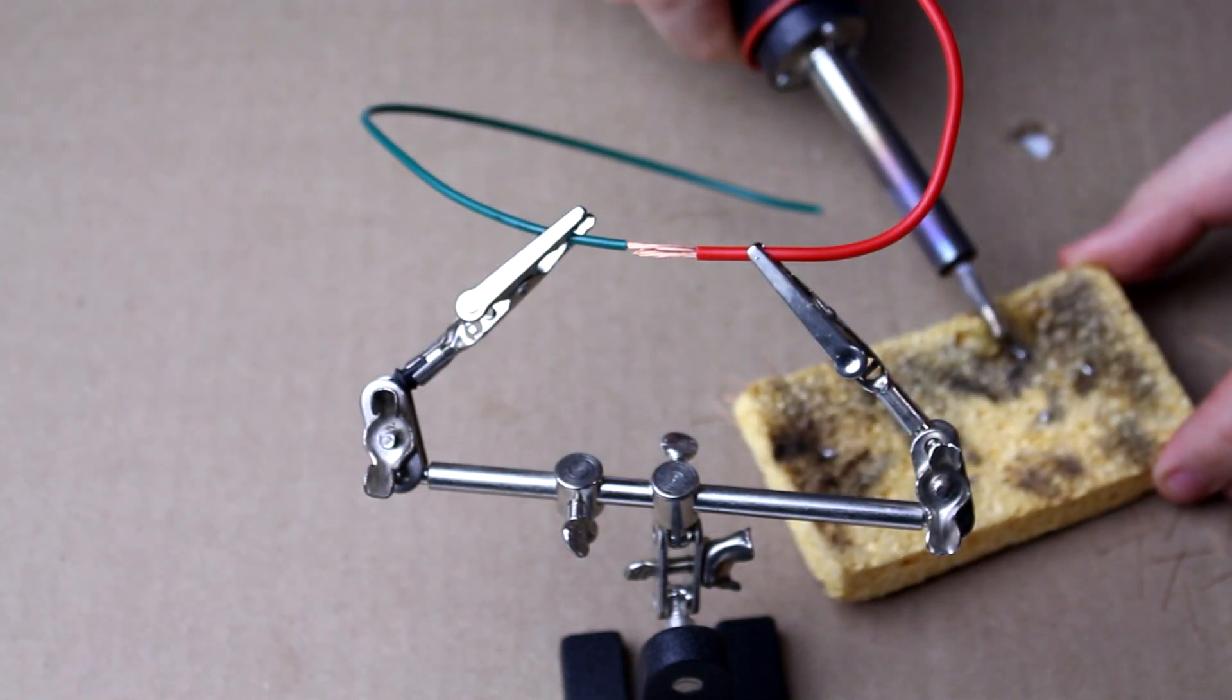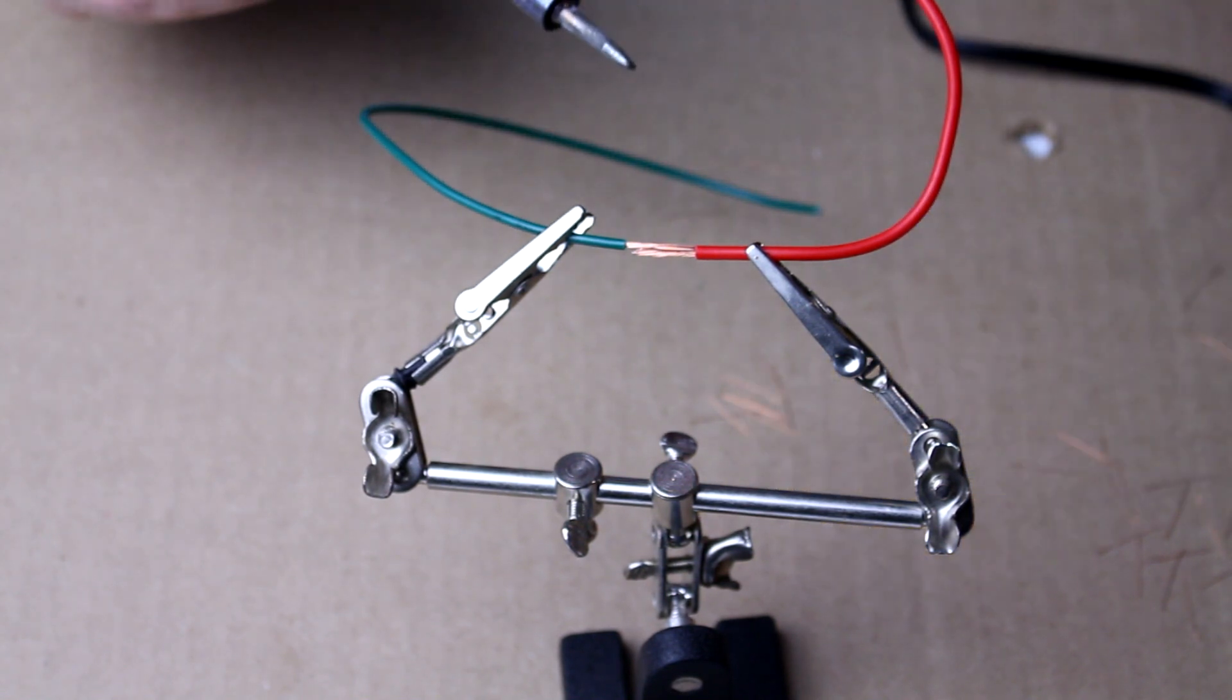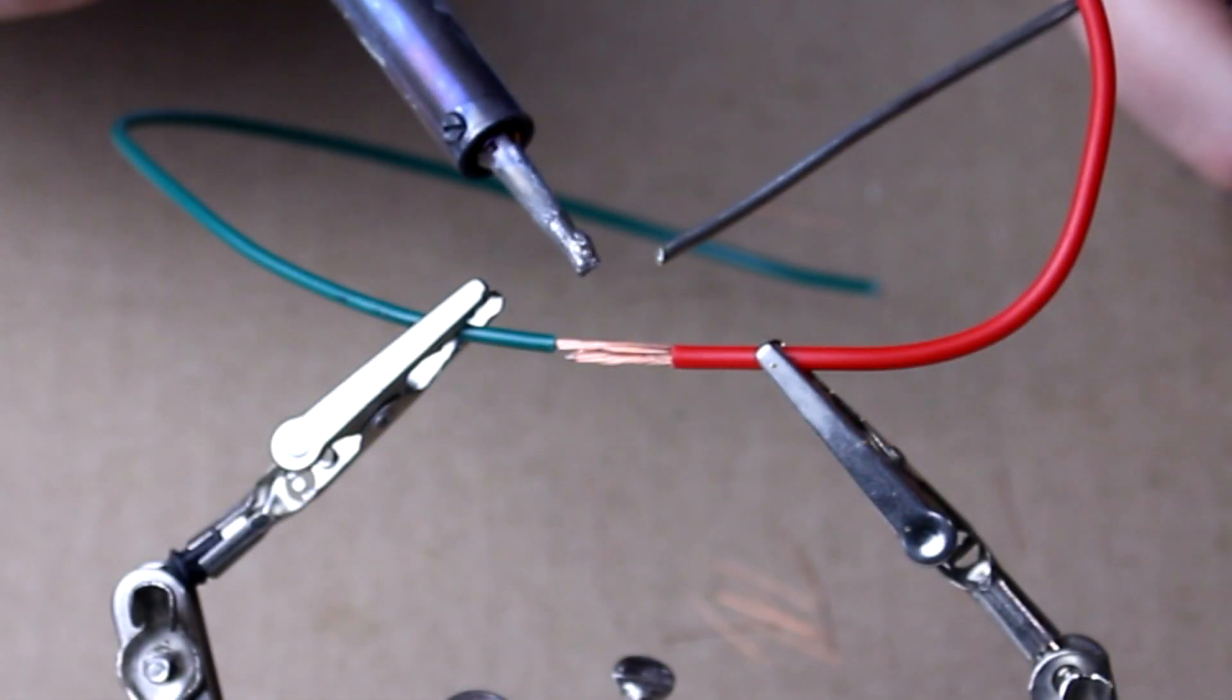So clean off the tip of your soldering iron. There's going to be fumes so make sure you do this in a well-ventilated area. Grab your resin core solder. It comes in different sizes so you'll get a sense of what you want to use for which kind of repair.